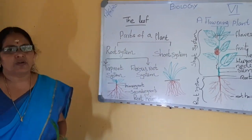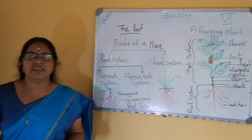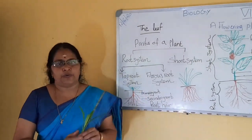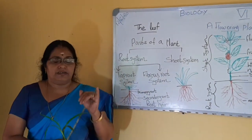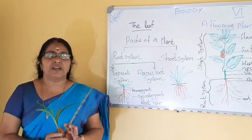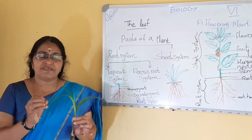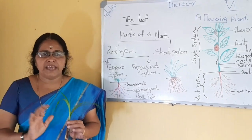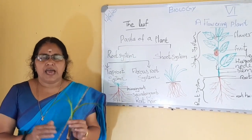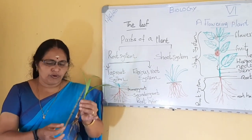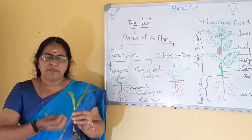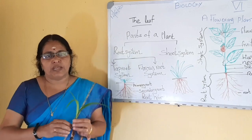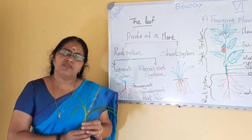Next is the functions of the root. What are the functions of the root? Without the root, the plant cannot remain in the soil and cannot grow. So, the first and foremost function of the root is to fix the plant firmly in the soil. The second function is to absorb water and minerals. The root absorbs water from the soil. Plants need a lot of water, and we water the plants in the soil, so the roots absorb that water.